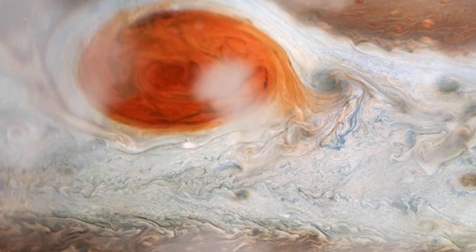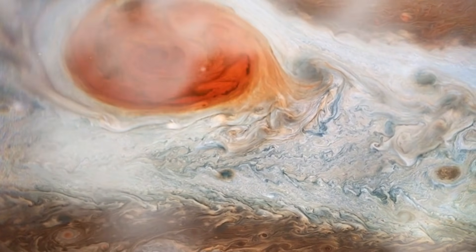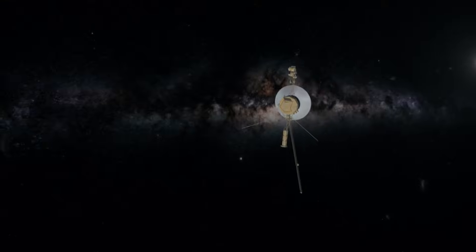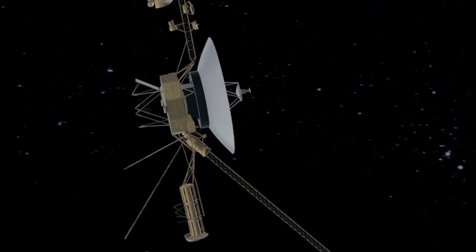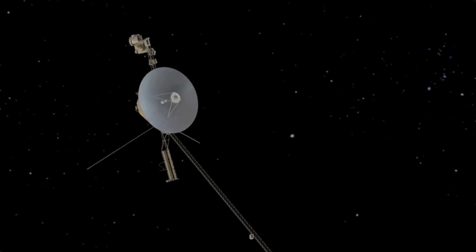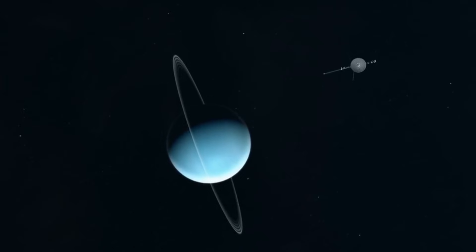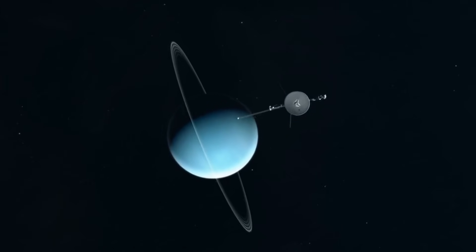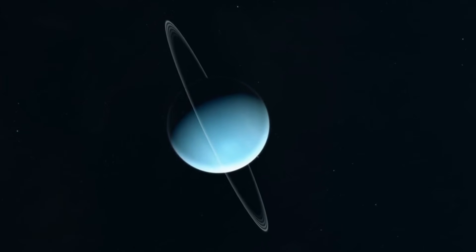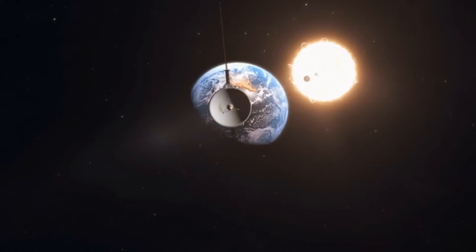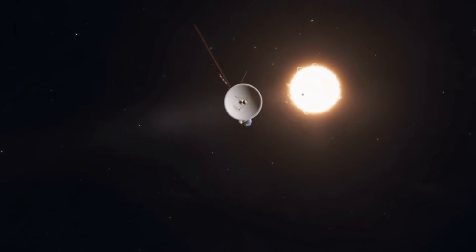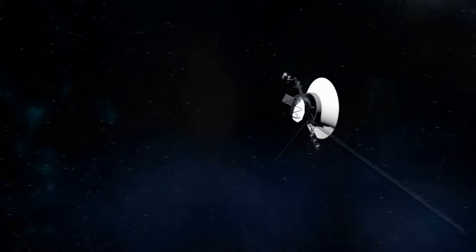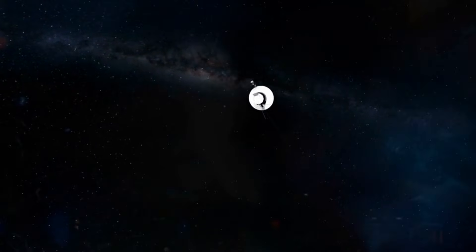While Voyager 1 continues its solitary journey, its twin, Voyager 2, has also made significant contributions to our understanding of the cosmos. Launched in the same year, Voyager 2 entered interstellar space in 2018, becoming the second human-made object to do so. Its data has provided valuable insights into the heliosphere, the bubble-like region created by the Sun's solar wind. By comparing data from both Voyager missions, scientists have gained a deeper understanding of the boundary between our solar system and interstellar space.